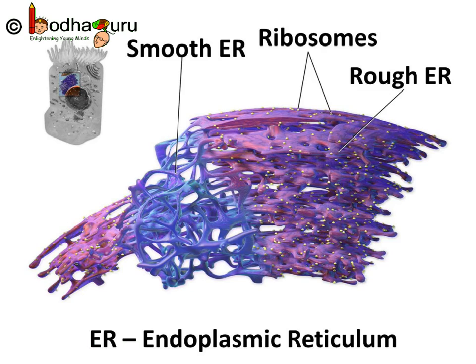Look at the picture carefully. Now what are those dots on the membrane of endoplasmic reticulum? Well, those are actually the protein factories of cells we are talking about. They are ribosomes. But not all endoplasmic reticulum have ribosomes on its outer surface.